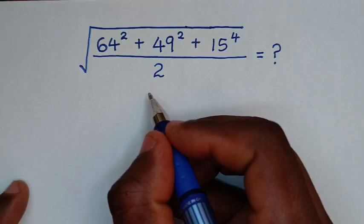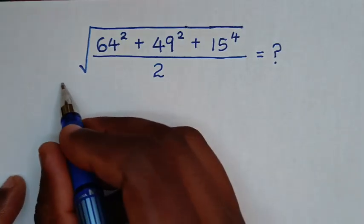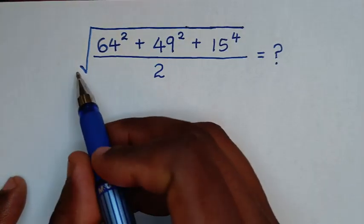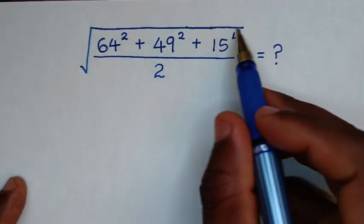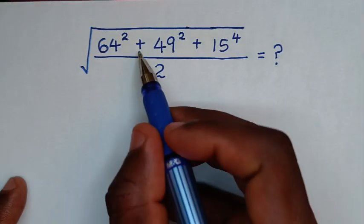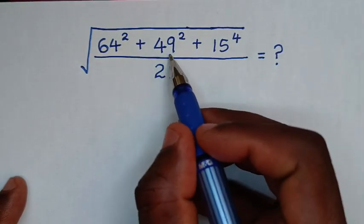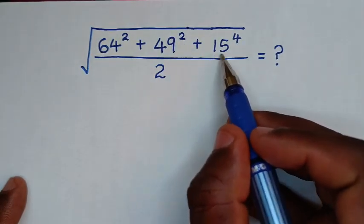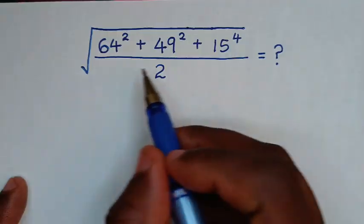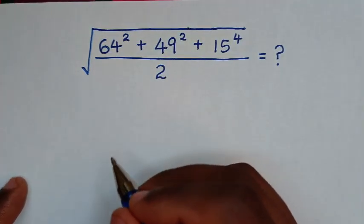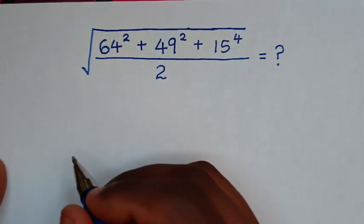Hello, you are welcome to solve this math problem: find the value of the square root of 64 squared plus 49 squared plus 15 to the power of 4, over 2. Solution.